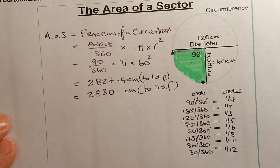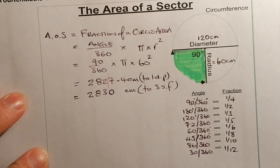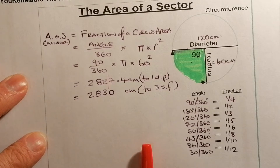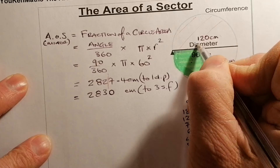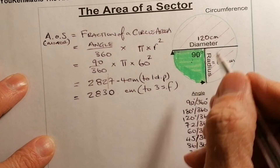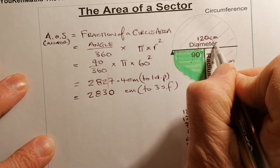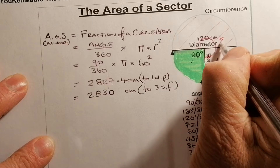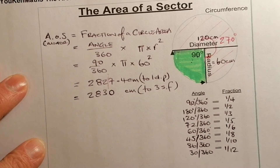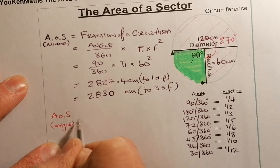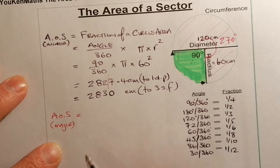Now let's look at the major sector. The sector we just worked out is the minor sector. The major sector is the bigger part of the circle area. To find the angle for the major sector, since the minor angle is 90 degrees, we do 360 minus 90, which leaves 270 degrees going all the way around. I'll quickly do this calculation — it's the major sector, not the arc, because we're finding the area.